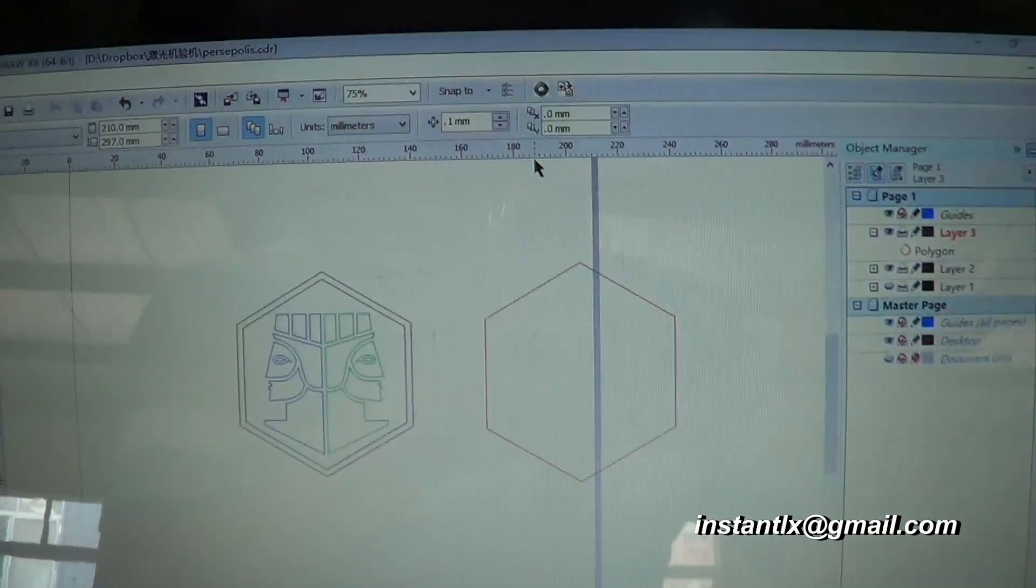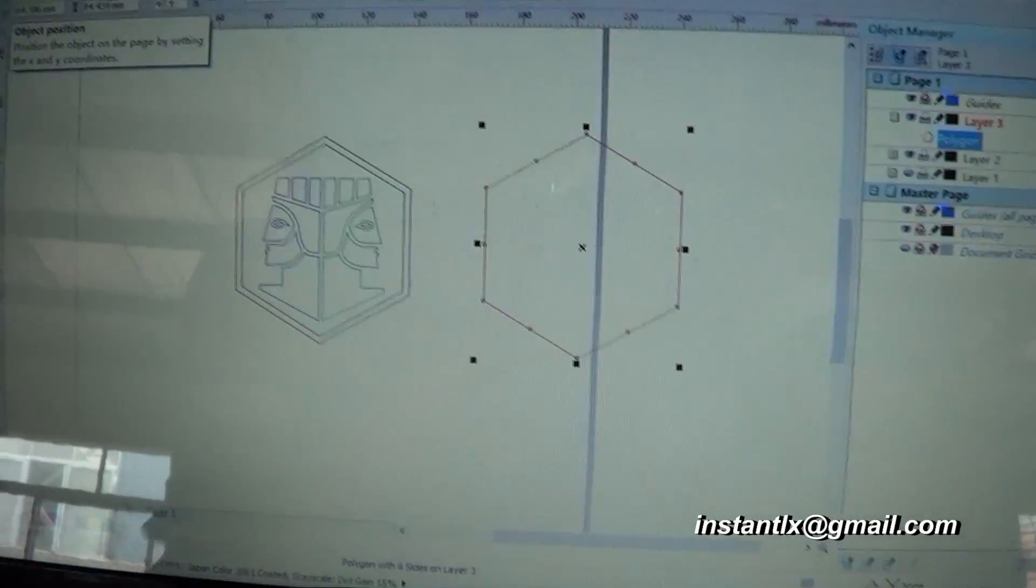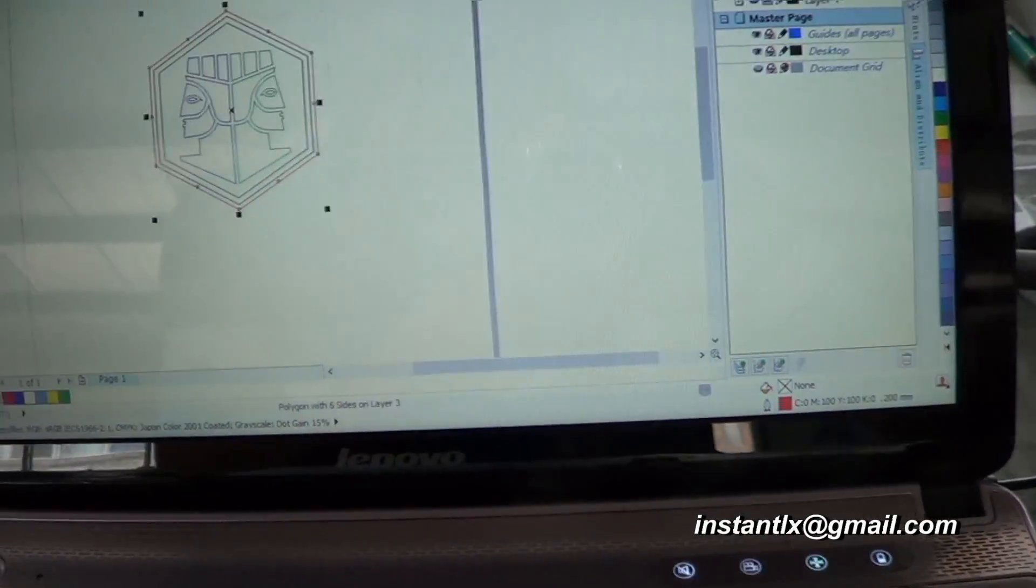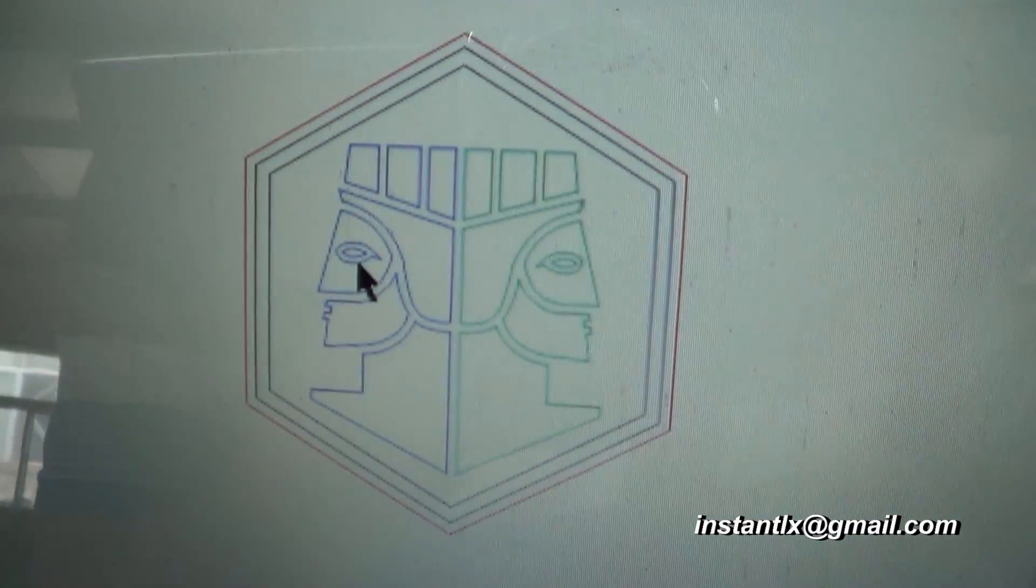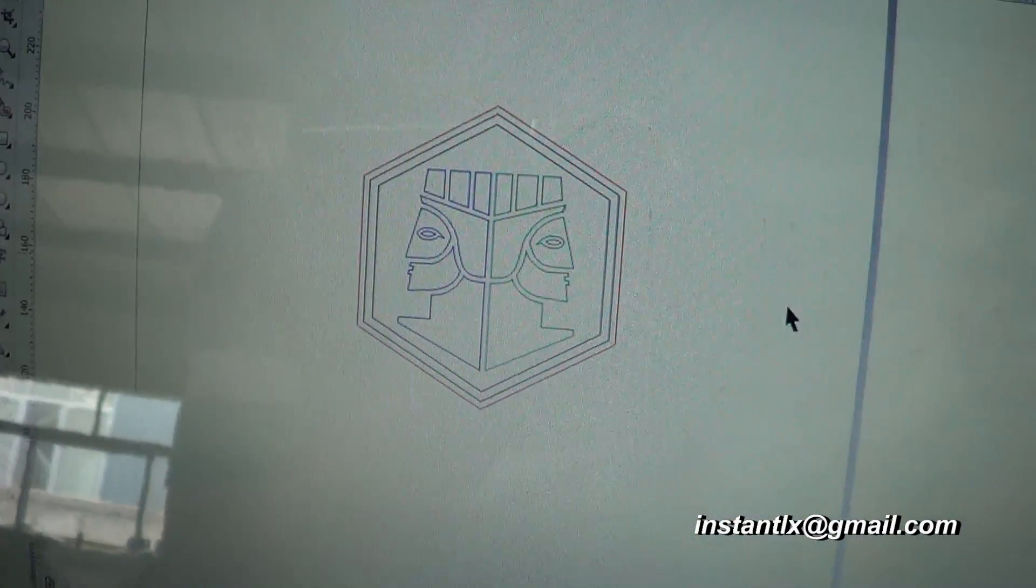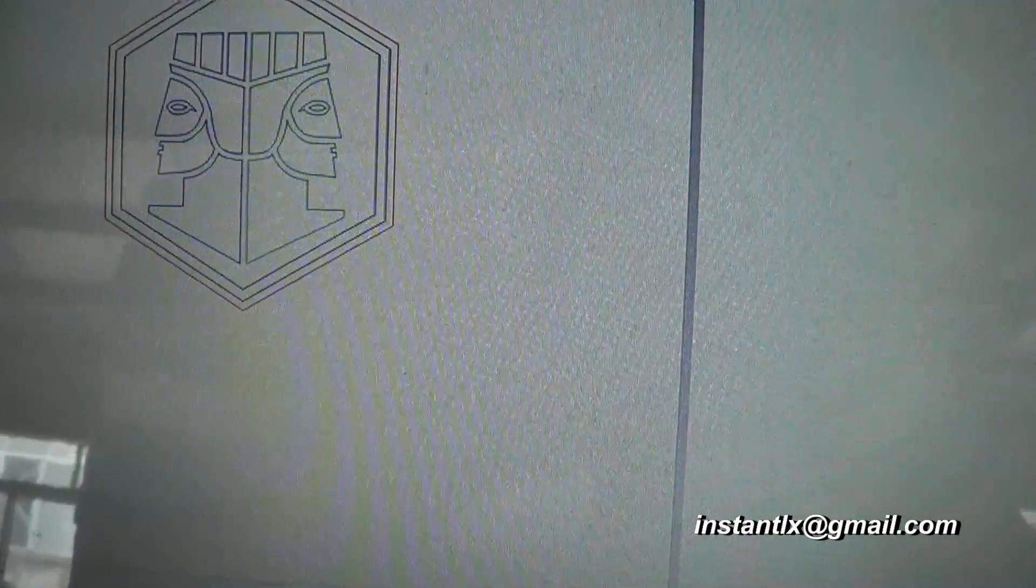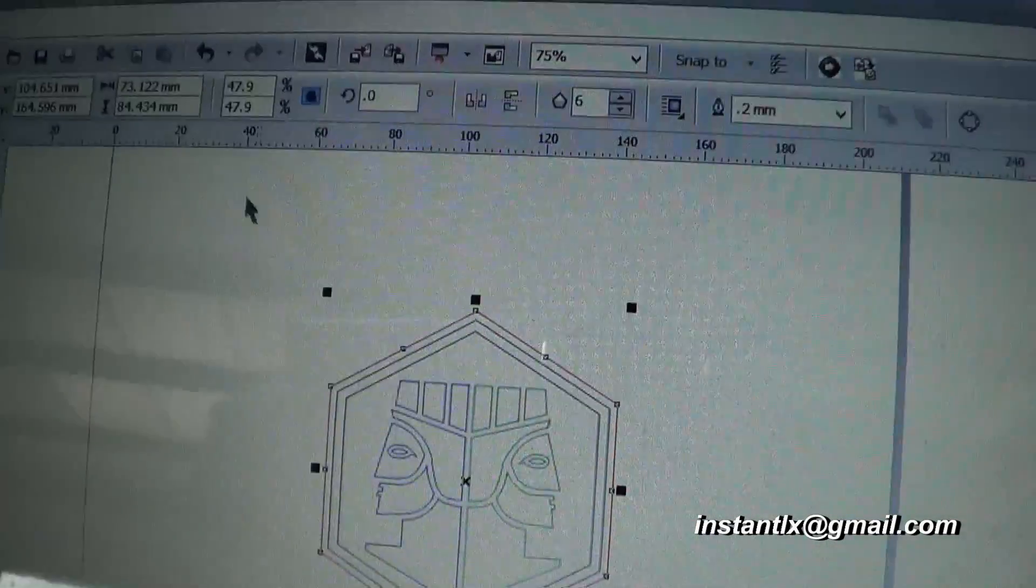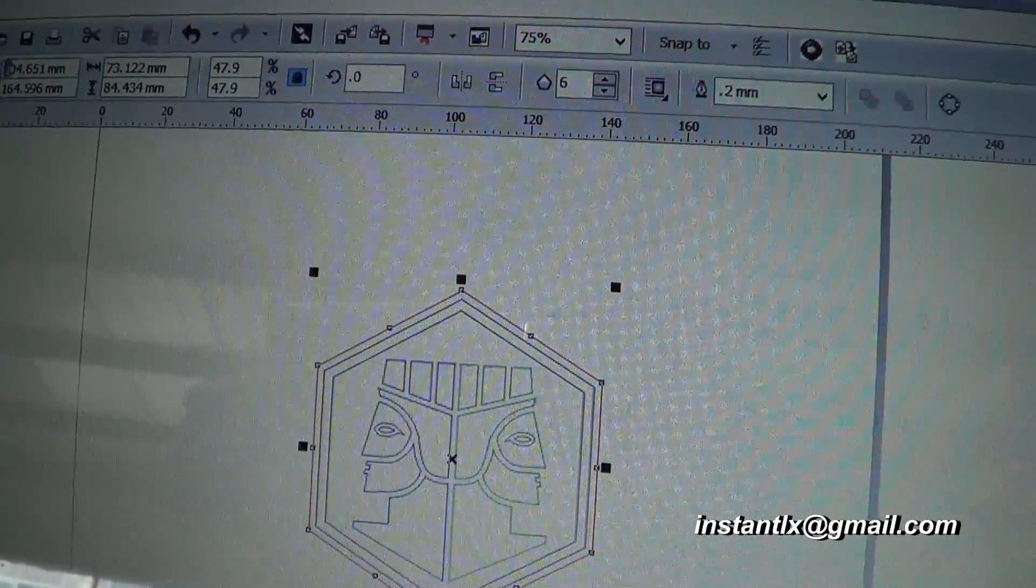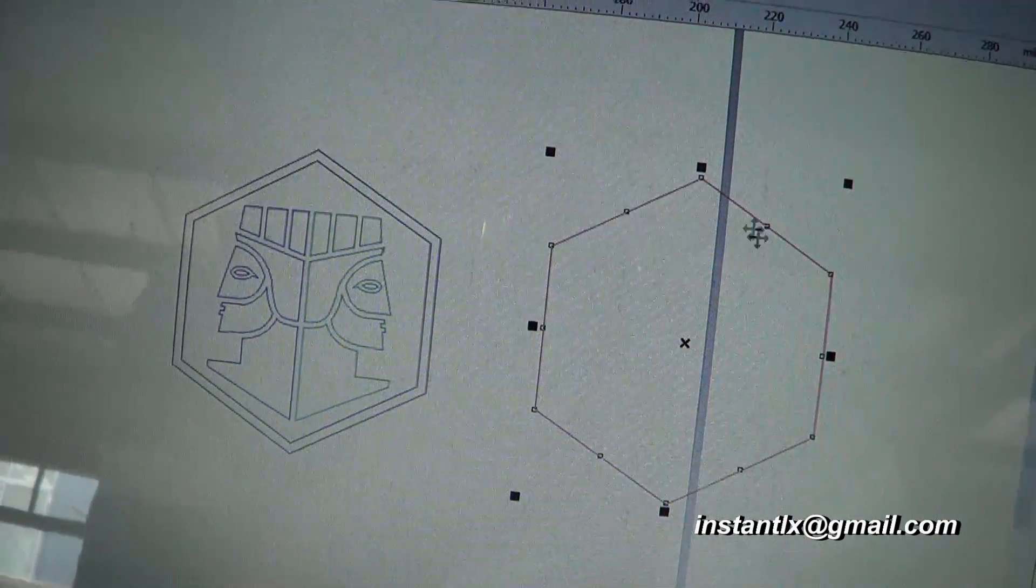This time we will try it on CorelDRAW and here is our original design. This is a pattern from my engraved medal and the red line we want to cut out so we move it 100mm to the right side.